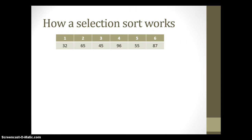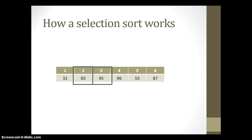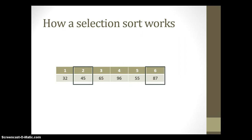Now we apply this algorithm again, but we don't need to include position one because we know it's sorted. We go from position two to six. Comparing position two and three, 65 is bigger than 45, so we swap. Comparing the new position two to position four — nothing wrong, so we don't do anything. Position two and five — nothing wrong. Position two and six — nothing wrong. After this second pass, positions one and two are sorted, but the rest of the array is not.